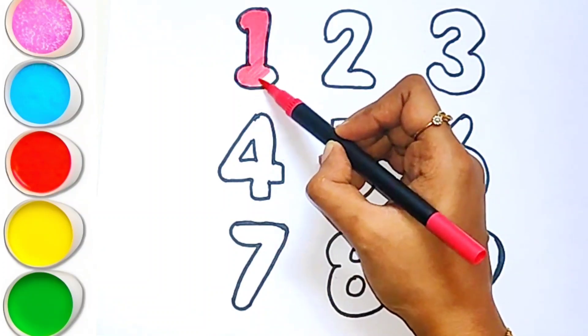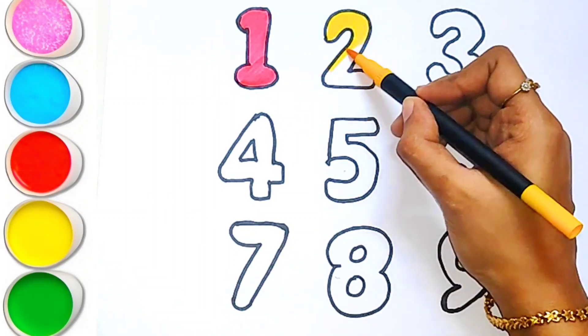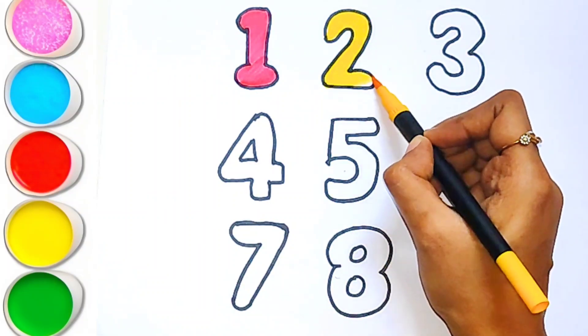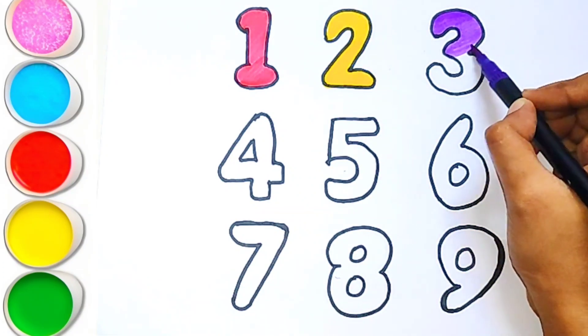Number 1. This is pink colour. This is yellow colour. Number 2. This is blue colour.